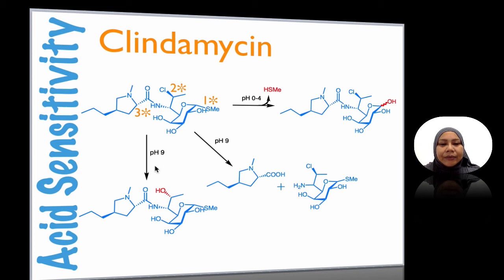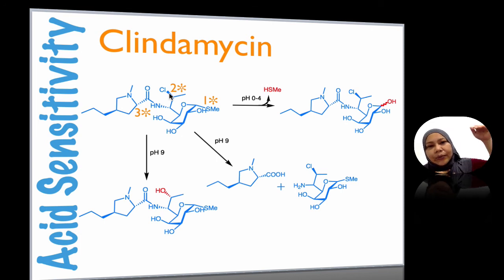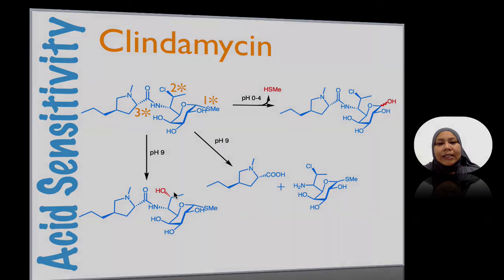The second pathway that could be taken at a higher pH is that it could lead to displacement of the chloro group by an OH group. Pay attention to the configuration here — it shows the group going into the plane, and this is coming at the back.